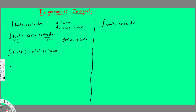Writing in terms of u, we get u⁶(1 + u²) du. Multiplying everything out gives u⁶ + u⁸ du, which is easy to integrate. Integrating gives u⁷/7 + u⁹/9 plus a constant.